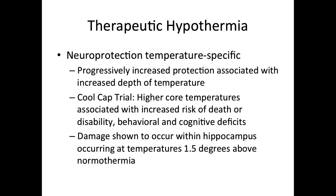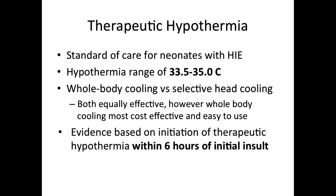The neuroprotection offered by hypothermia is temperature specific. Progressively increased protection is associated with an increased depth of temperature. The COOL-CAP trial showed that higher core temperatures were associated with an increased risk of death or disability, behavioral and cognitive deficits. Therapeutic hypothermia uses a goal temperature range of 33 to 35 degrees Celsius, based on initiation within six hours of the initial insult. Either whole body cooling or selective head cooling can be used; both have been shown to be equally effective, and whole body cooling is usually most cost effective and easiest to use.